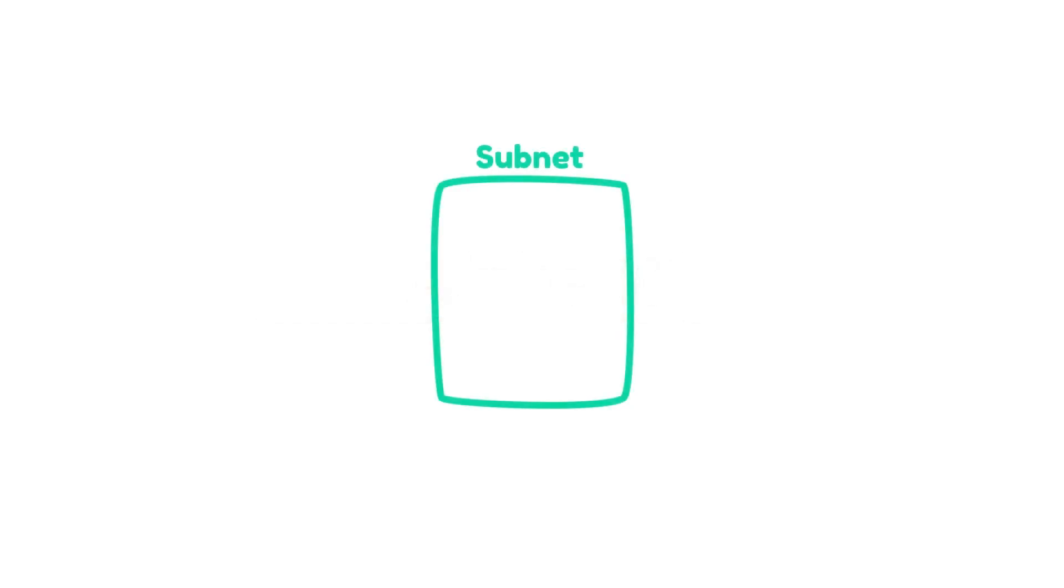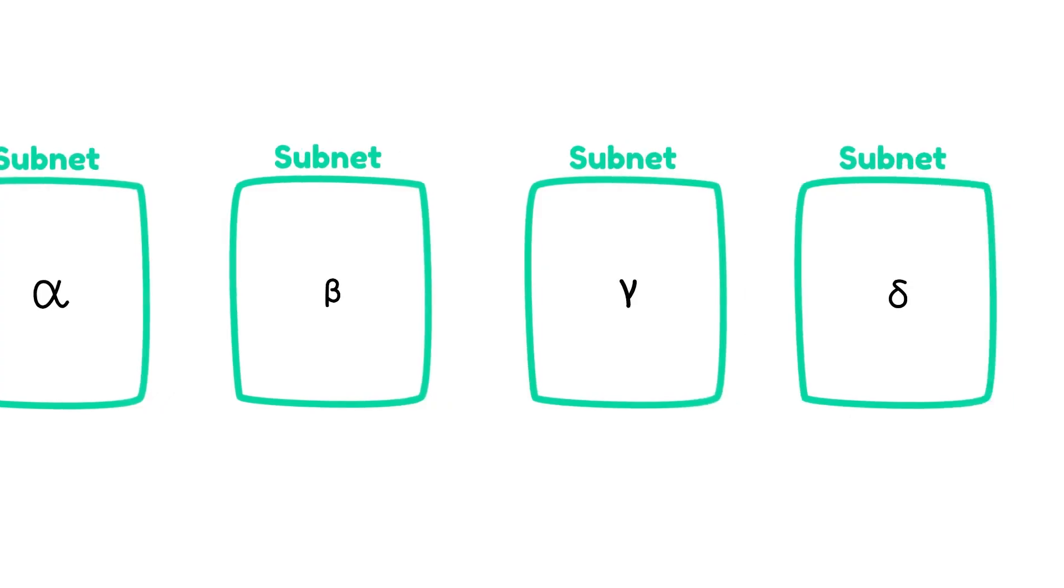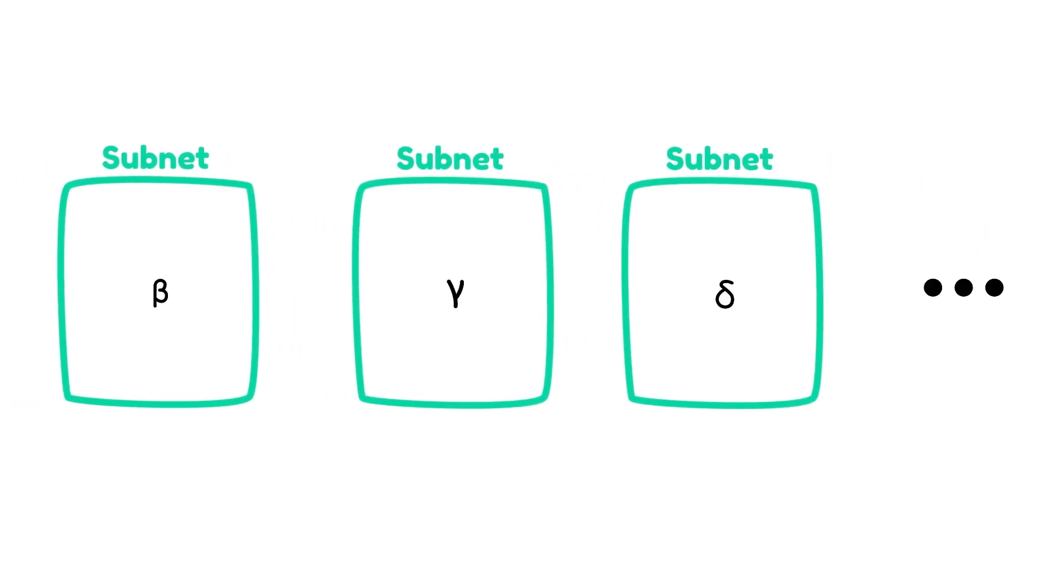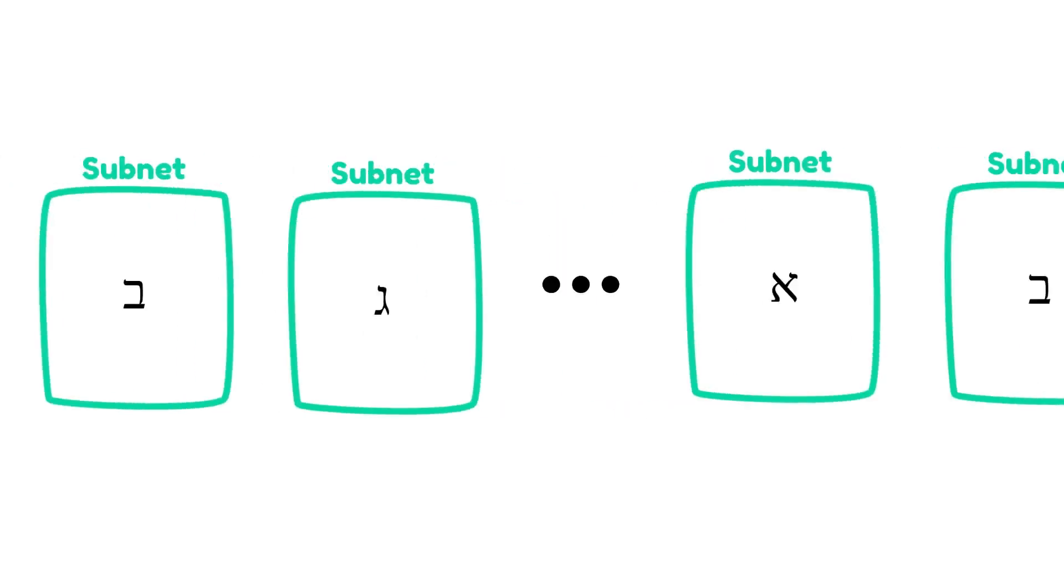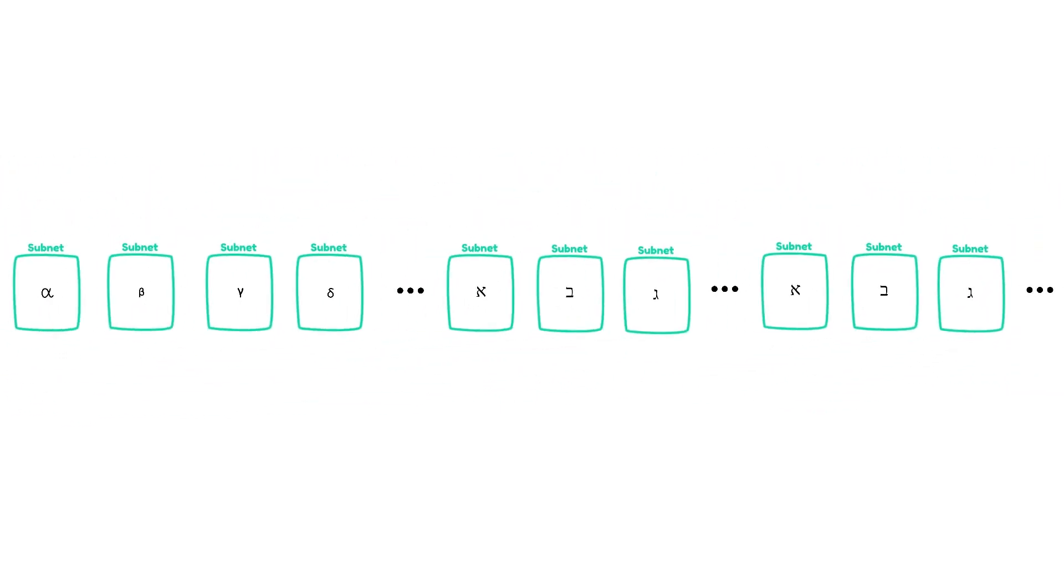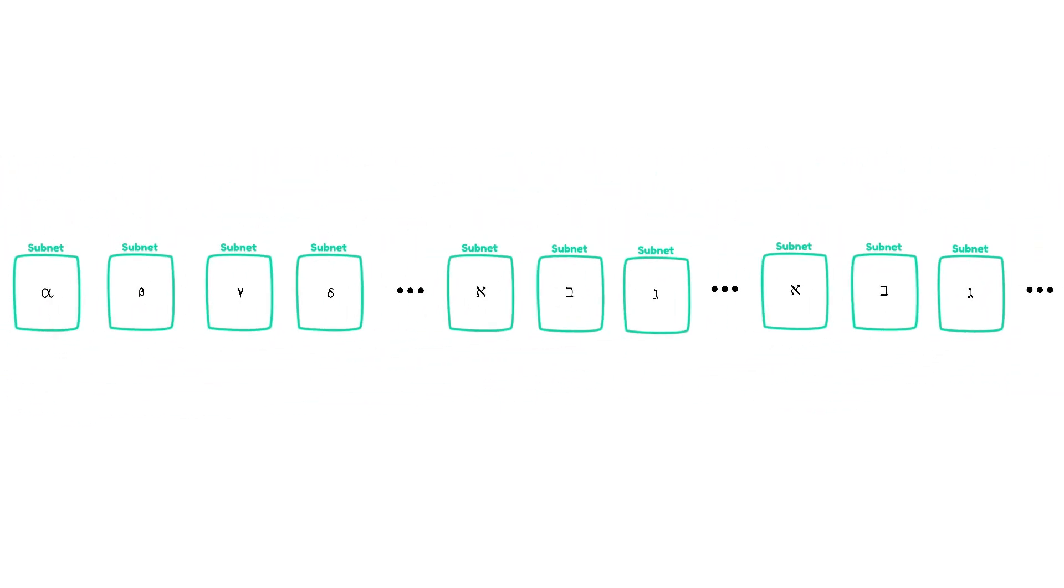Each subnet has its own unique token internal to BitTensor. Alpha, beta, gamma, delta, etc. After all the Greek letters are exhausted, we'll move to the Hebrew alphabet, then Arabic, etc. We refer to these tokens generically as the subnet's alpha token.